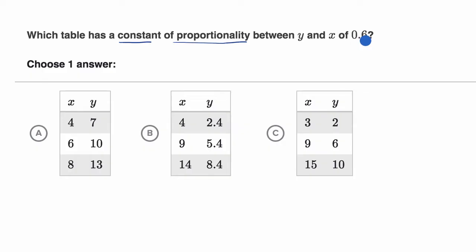All right, so just as a reminder, the constant of proportionality between y and x, one way to think about it is that y is equal to some constant times x. Y is proportional to x, and this constant right over here is our constant of proportionality.